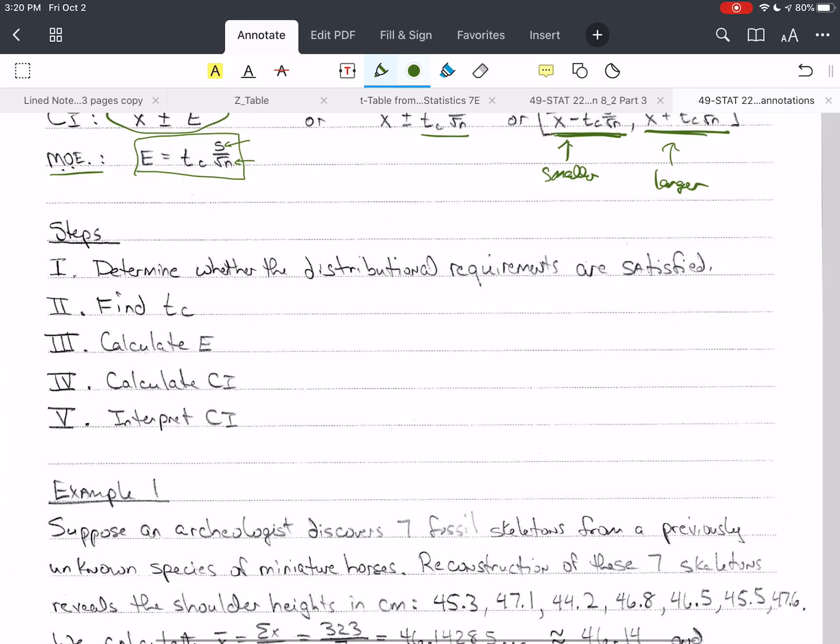Here are the steps that we want to follow. First, determine whether the distributional requirements are satisfied. Second, find the critical value t sub c. Then calculate e. Then calculate the confidence interval. And finally, most importantly, interpret the confidence interval. If we don't interpret the confidence interval, we have not done statistics. We have just done math. The statistics part is interpreting correctly this confidence interval in such a way that almost anyone can understand what we're saying.